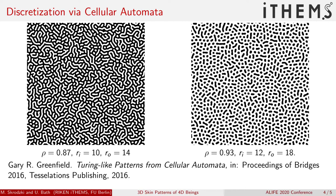Here are two outcomes of cellular automata that create Turing-like patterns for different parameters. Note that there are three parameters here: there's an initial activation probability rho, there's an inner radius, that is the radius of the activator morphogen,